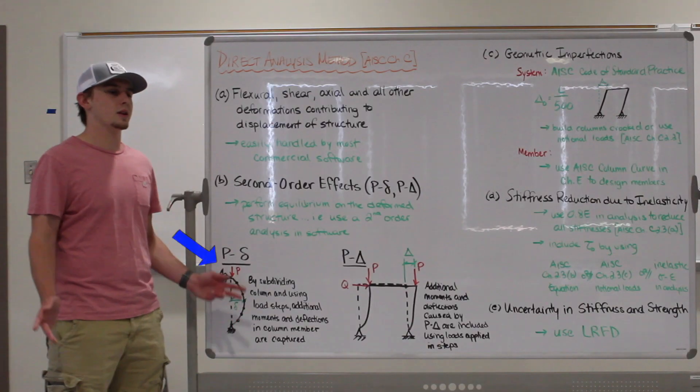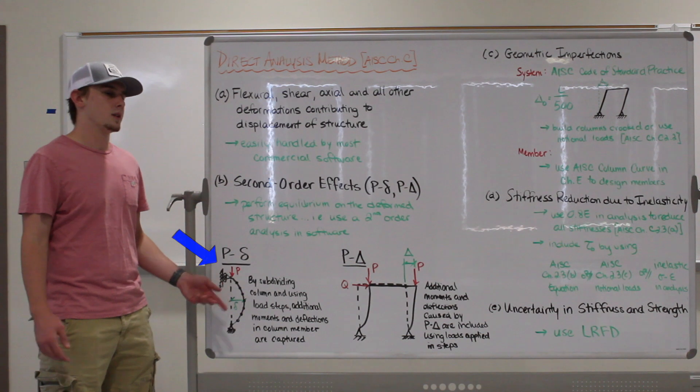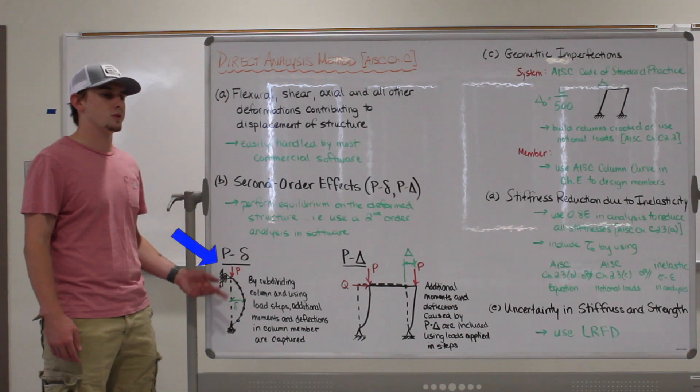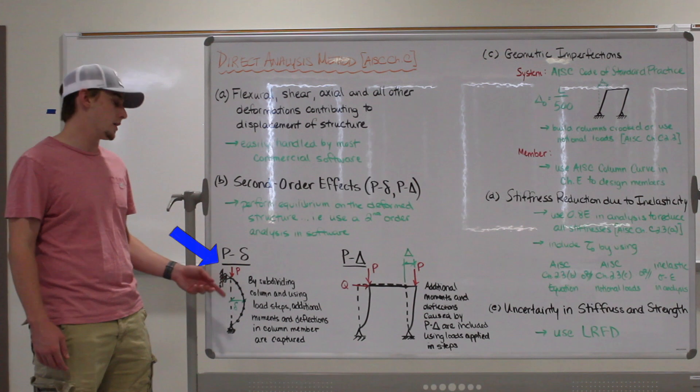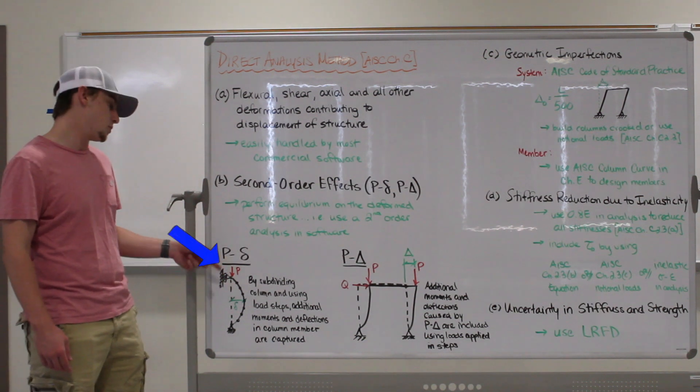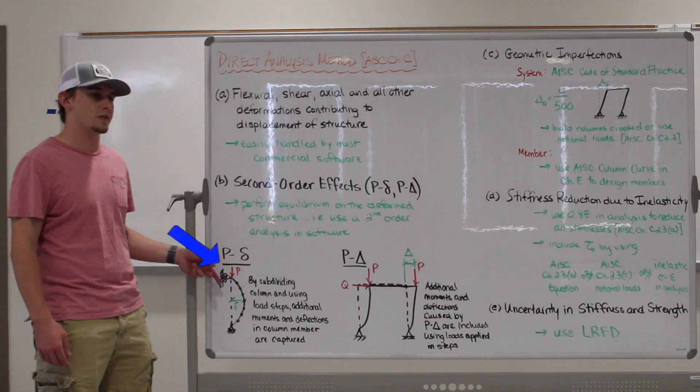And what about the P little delta, though? It's the same thing, but on the member level. Since we subdivided each of our members, we're better capturing the bent geometry of the member as the load is applied in increments, thus accounting for the P little delta effect. So that's the reason why we modeled all the columns with an L over 500 out-of-plumbness, to account for additional moments and deformations due to geometric imperfections in the system.